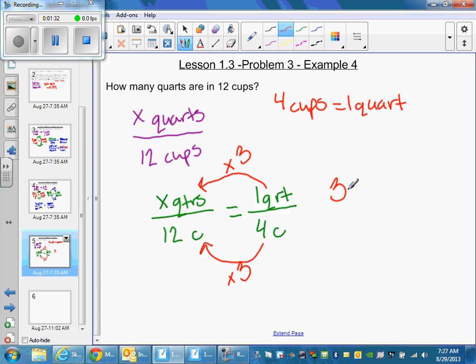That is 3 quarts in 12 cups. We can see that one-fourth is also equal to three-twelfths because if we simplified 3 over 12, we would get 1 over 4. So there is your answer.